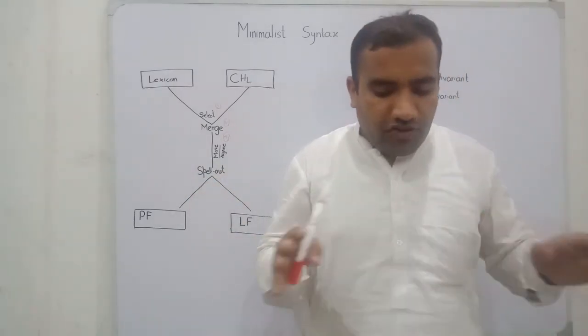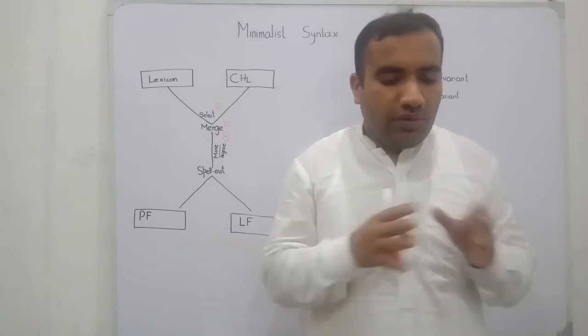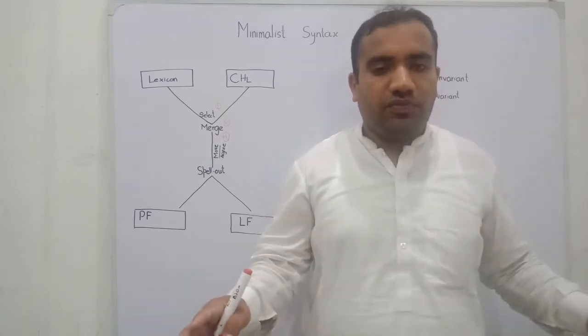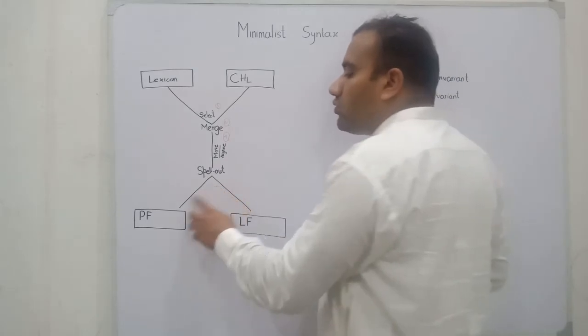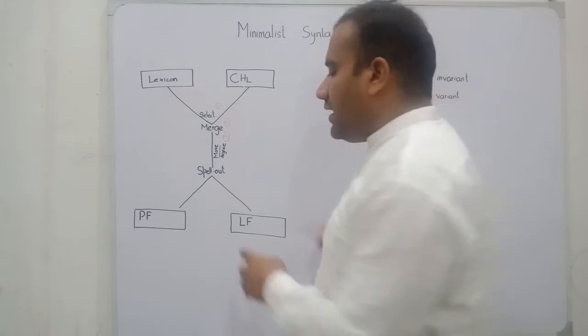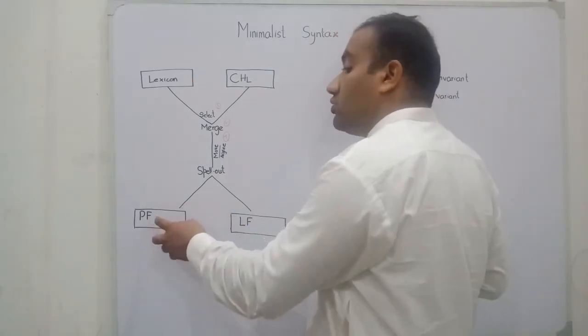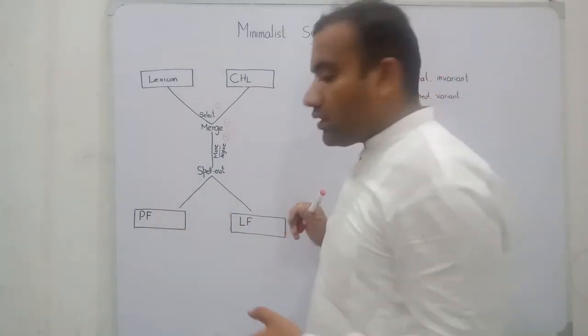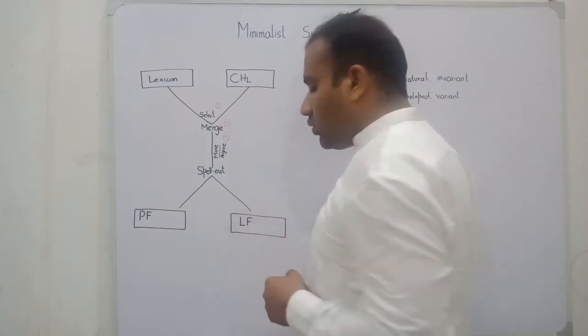and divides into two strings. One is going to the PF and one is going to the LF. PF means phonetic form. LF means logical form.